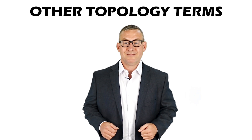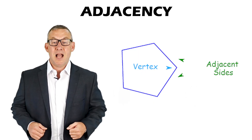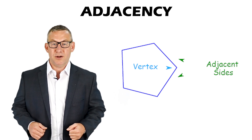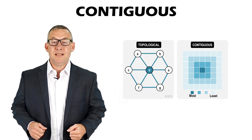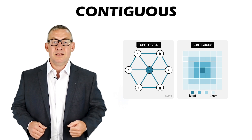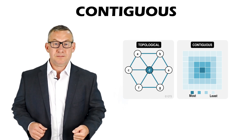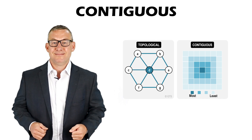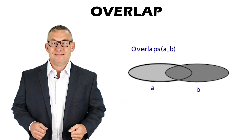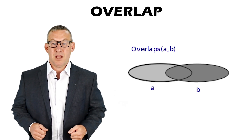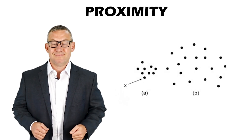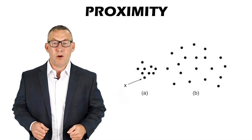Other topology terms include: Adjacency — adjacent features share a common boundary or touch each other. Contiguity — contiguous features are connected or share a border; in a map, contiguity represents areas that are physically touching. Overlap — overlapping features occupy the same space. Proximity — proximity refers to how close features are to each other.